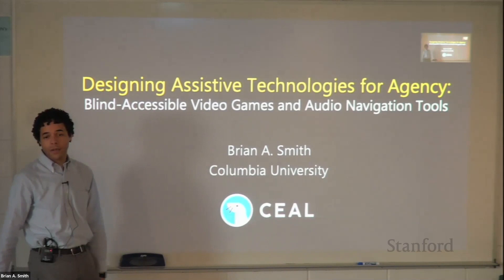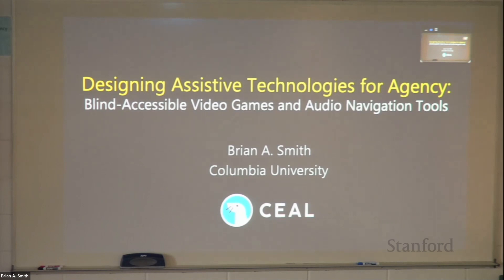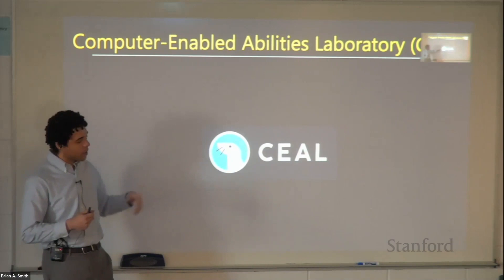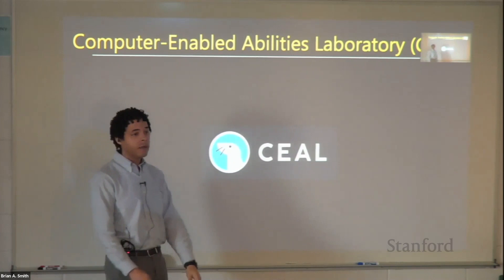My lab is the Computer Enabled Abilities Lab, or SEAL for short. The type of work that we do is make it so that computers can grant people abilities — the ability to better experience the world. There are four threads of skills we employ in our research: one is accessibility, of course.